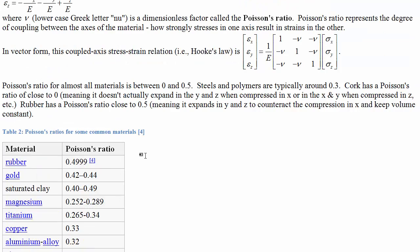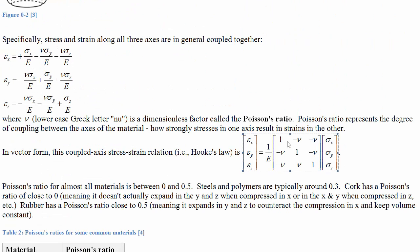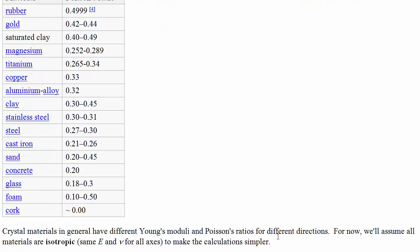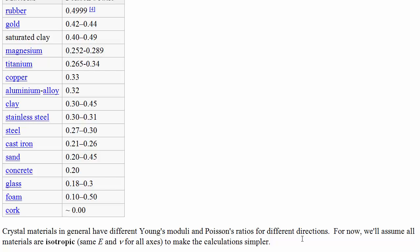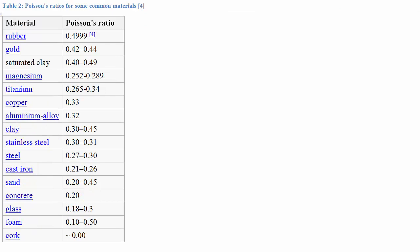This matrix, where we've written nu in all the relevant components and factored out E, is only valid if the Young's modulus and Poisson ratio are the same for all directions in the material. This won't be true for materials with significant crystal asymmetry. For more complicated crystals, Young's modulus and Poisson ratio change in different directions. For now, we'll take the simple case of materials that are amorphous or have the right crystal structure to be isotropic — the same in all directions.